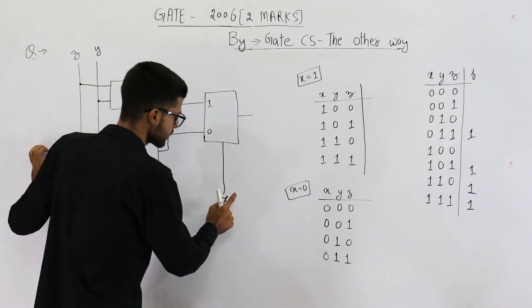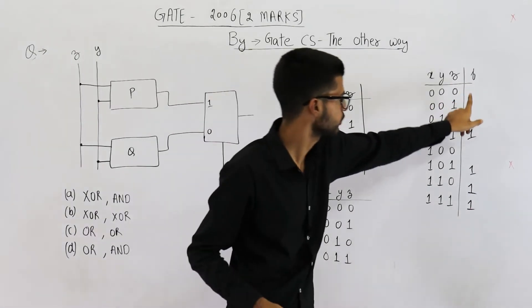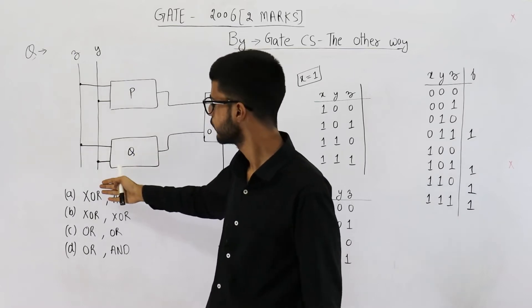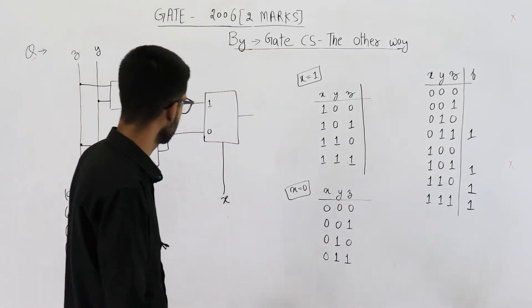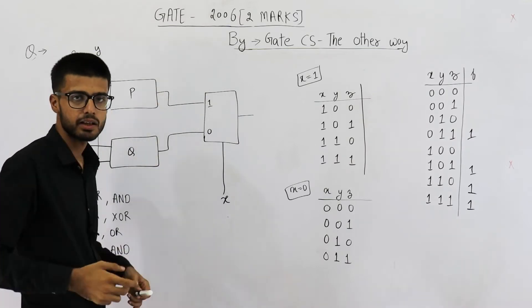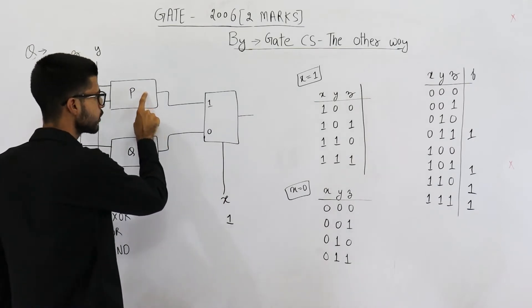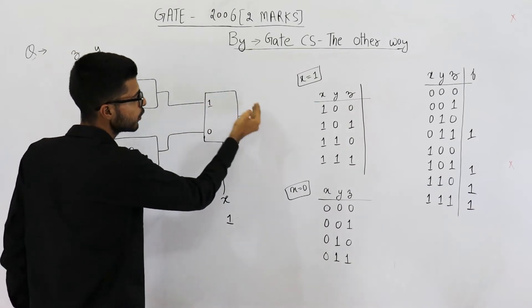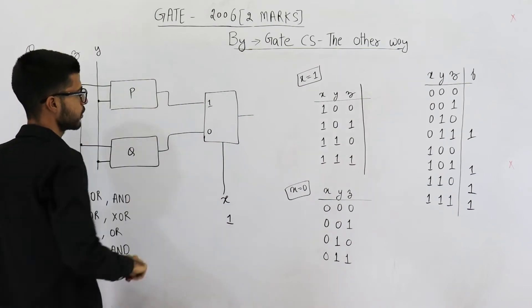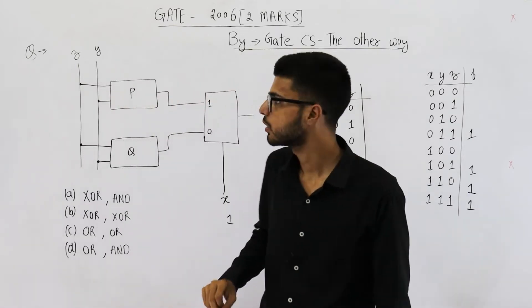The three inputs to this circuit are X, Y, and Z, and this is the output. The question asks what P and Q are, given four possible options. Let us fix the select line of this multiplexer to analyze P and Q one by one. If X is one, whatever is the output of P — connected here — will be given as the final output of the multiplexer. So when X is one, the final output will be the same as the output of P.